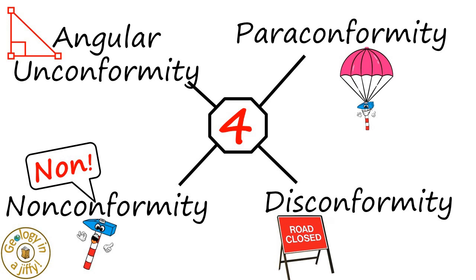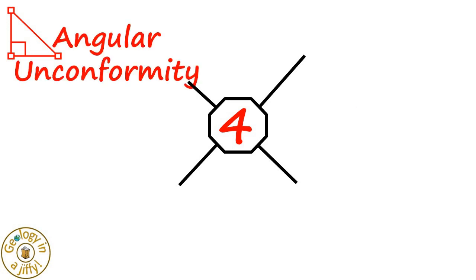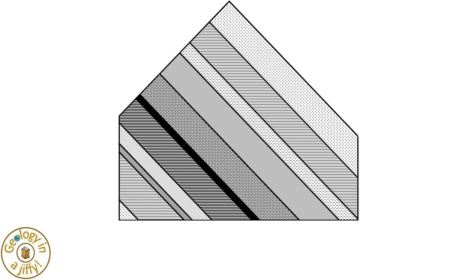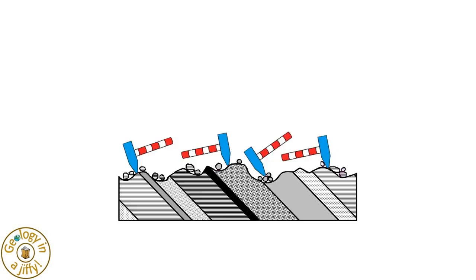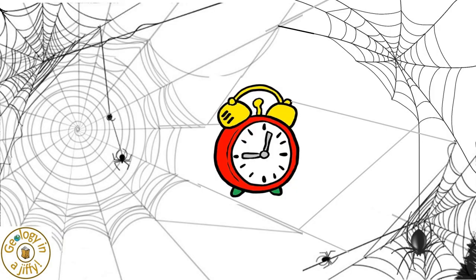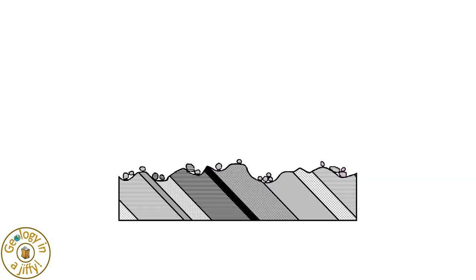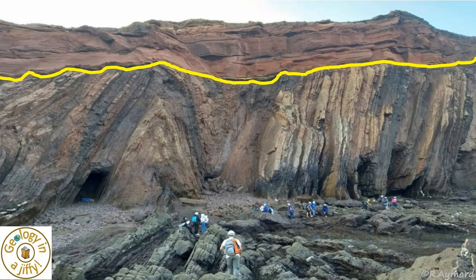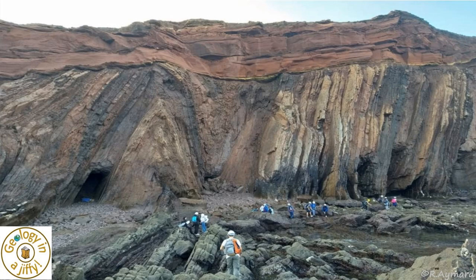The answer is an angular unconformity! Because these form by ancient layers of rock undergoing deformation and folding, and so are buckled, which are then eroded down, this followed by a time of no deposition, then deposition of layers at a differing angle to the underlying bedrock, as we can clearly see by this angular plane of unconformity at this wonderful location.